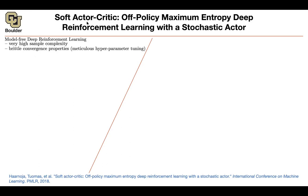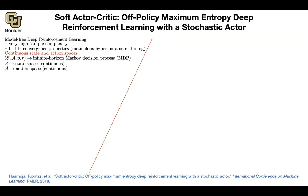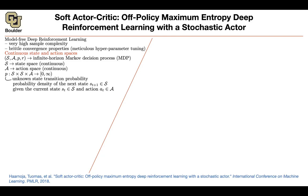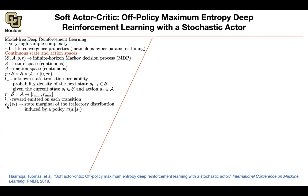A quick recap of the notation. You have an infinite horizon Markov decision process. S is your state space — it could be continuous. A is your action space — it could be continuous. You have your transition probability that takes you from a pair of a state and an action to the next state. You have a bounded reward, so you're not going to collect infinite reward or minus-infinite penalty. This is the state marginal of the trajectories — a distribution used for mathematical convenience, based on your policy — and similarly for pairs of state and action.